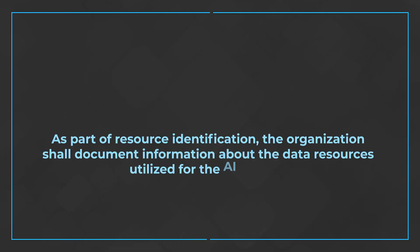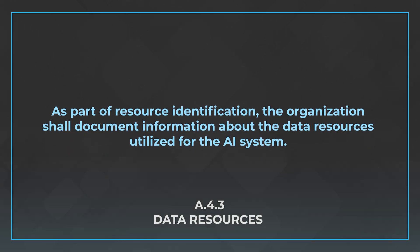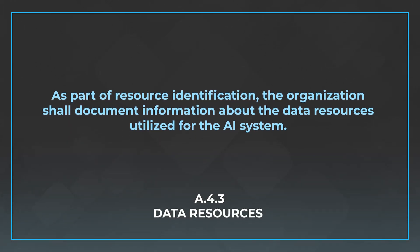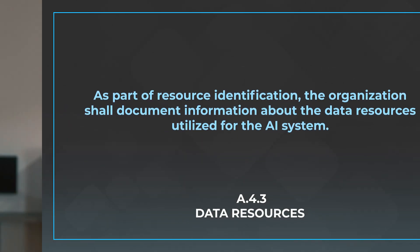A.4.3 is data resources. This specifically talks about the data resources you're going to need in order to utilize the AI system. The control reads: as part of resource identification the organization shall document information about the data resources utilized for the AI system.